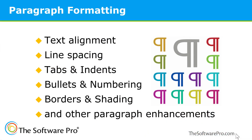Paragraph formatting includes text alignment like left, center, or justify; line spacing; tabs and indents; bullets and numbering; borders; shading; and other paragraph enhancements. The smallest unit paragraph formatting can be applied to is one paragraph, and a paragraph is defined by a paragraph mark at the end of the text.